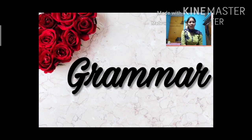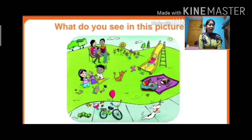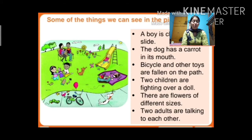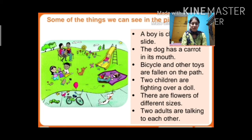Now we will learn some new things in grammar. Children, what do you see in this picture? We can see a boy climbing a slide, a dog with a carrot in its mouth, a bicycle and other toys fallen on the path, two children fighting over a doll, flowers of different sizes, and two adults talking to each other.